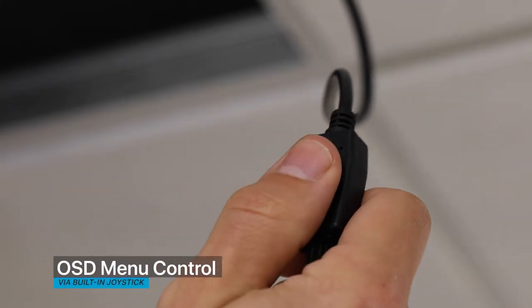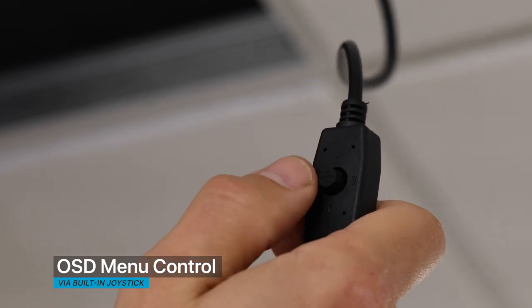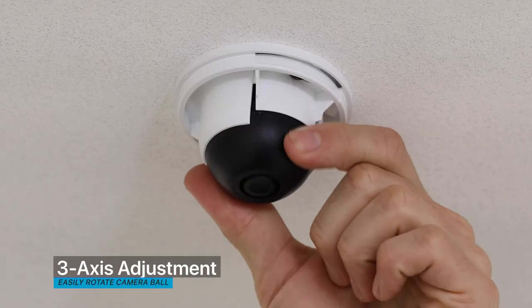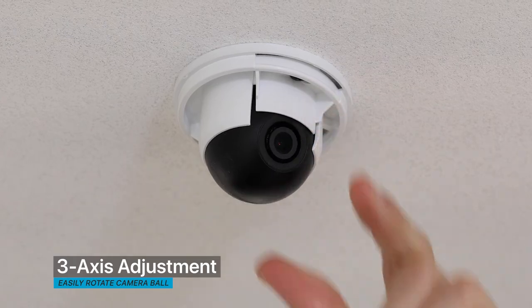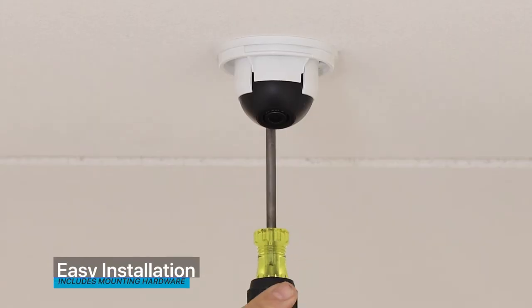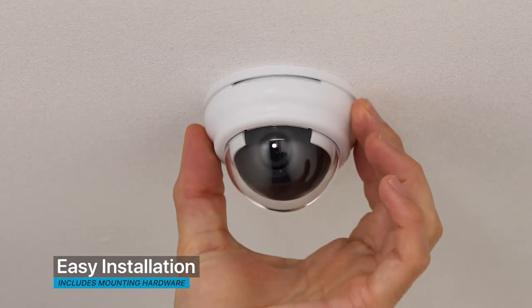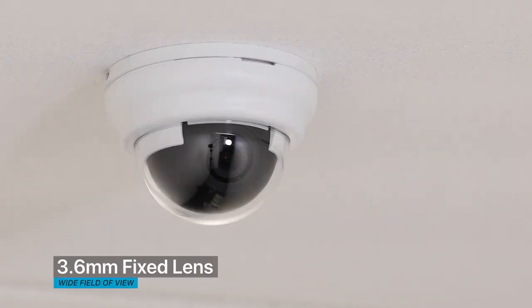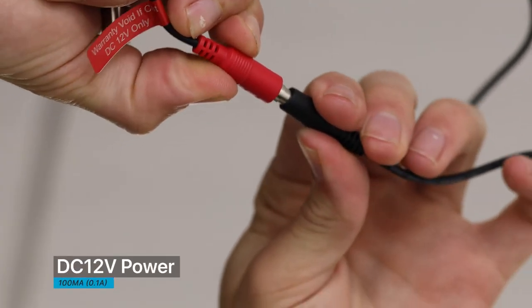Installers can easily make OSD menu adjustments with the built-in joystick on the cable. Other features include flexible 3-axis adjustment, an easy to install polycarbonate housing, a 3.6 millimeter fixed lens, and DC 12-volt operation.